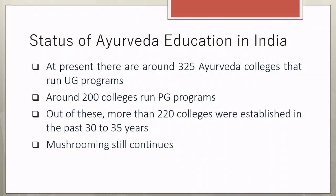Coming to the status of Ayurveda education in India, at present we have more than 300 Ayurvedic colleges that run undergraduate programs, and out of these around 200 colleges also run postgraduate programs. More than 220 colleges were established in the past 30 to 35 years, so there has been a mushrooming in the number of colleges especially during the last 3 to 4 decades, and this is still continuing.